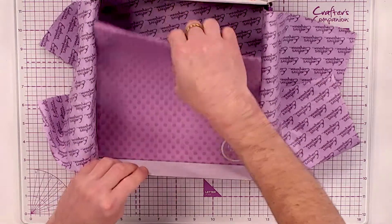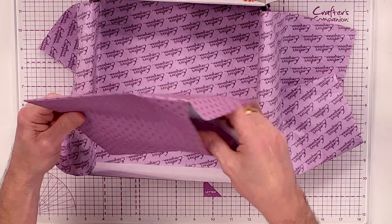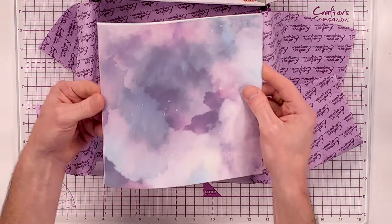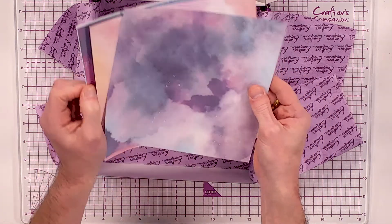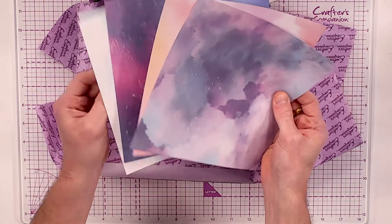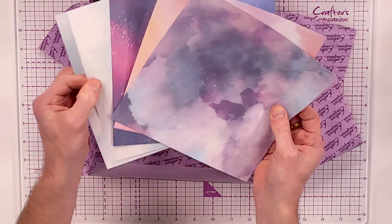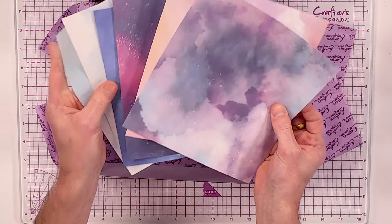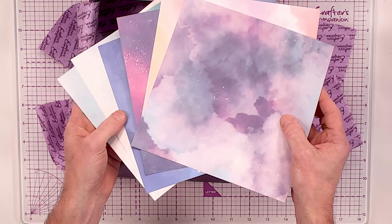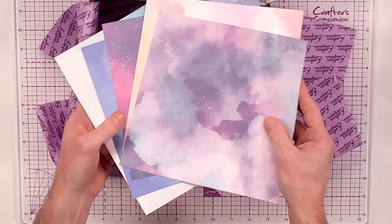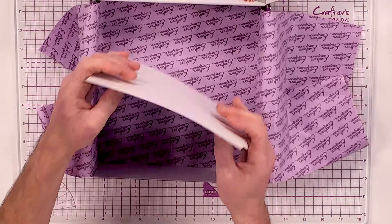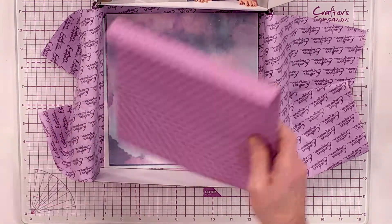And then what you're also going to be getting is 18 sheets of your printed paper. Once again, you are going to be getting six designs and you're going to get three of each. However, I have got one of each to show you. When it comes to your subscription box, all of that is included within number 54, which is all about your silhouette craft kit.